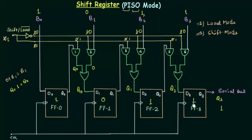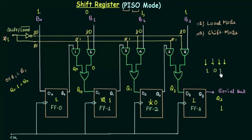After the first shift, the 1 from flip-flop 0 is shifted to flip-flop 1, the 0 from flip-flop 1 is shifted to flip-flop 2 — so flip-flop 2 becomes 0 — and the 1 from flip-flop 2 is shifted to flip-flop 3. The data was first entered in parallel as 1, 0, 1, 1, then shifted, giving output 1. After shifting, flip-flop 3 holds 1, flip-flop 2 holds 0, and flip-flop 1 holds 1.